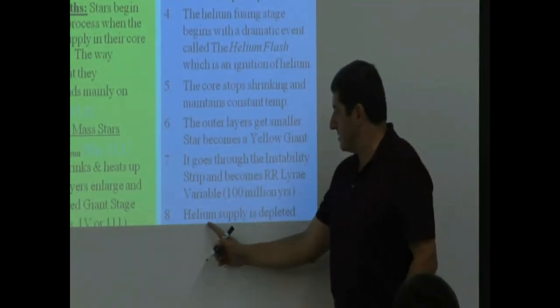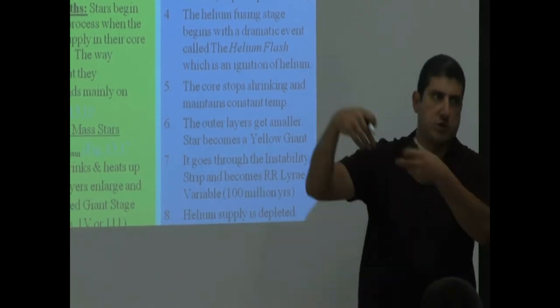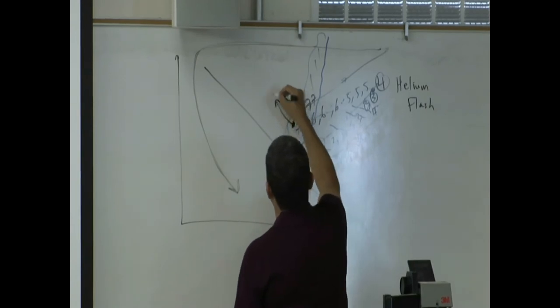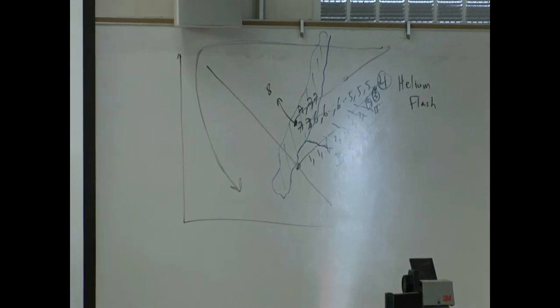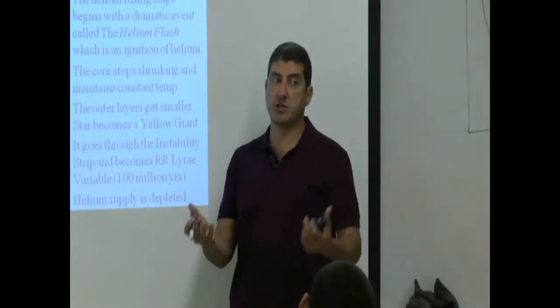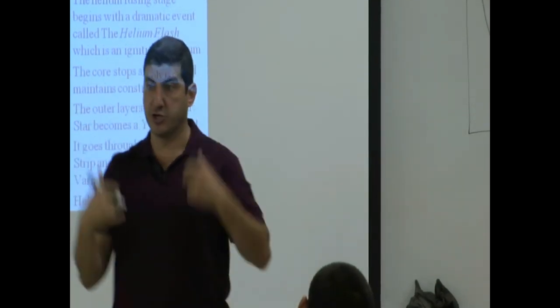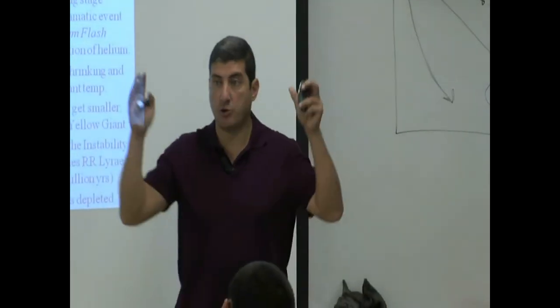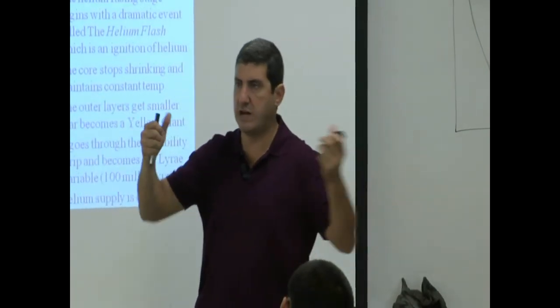Step eight, helium supply is depleted. Now it can no longer use helium to convert into energy, and that spells doom for the star. So step eight takes place at this corner. Helium is depleted. What does that do? That makes the core start shrinking again. Remember, it had stopped shrinking. Now it's going to start collapsing again. Why is it collapsing? Gravity. Gravity keeps things always shrinking if you don't have enough energy to push out. Gravity is going to cause you to shrink.